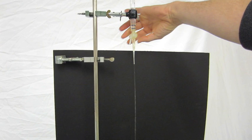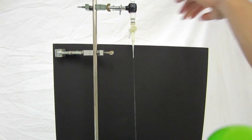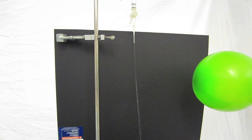Here you see a burette set up to let out a thin stream of water. Here you see a green balloon that's been charged with static. You can do this by rubbing it on your shirt or on your hair, but the idea is to get it full of electrons. Let's bring it next to the water stream and see what happens.